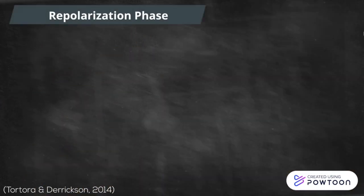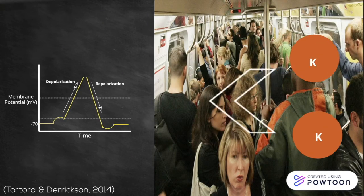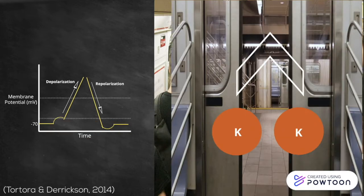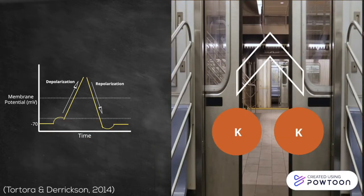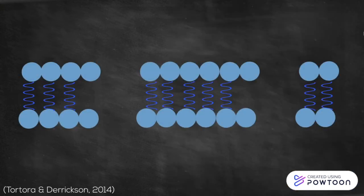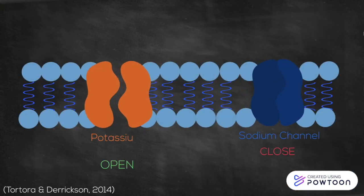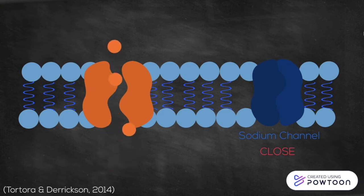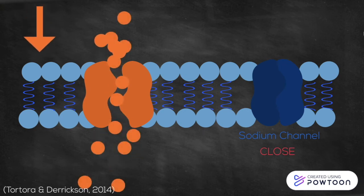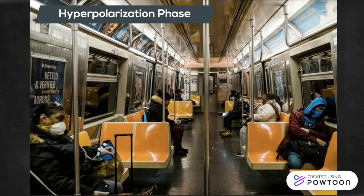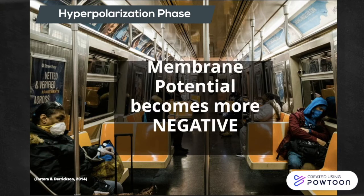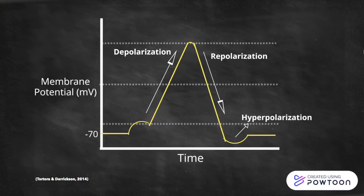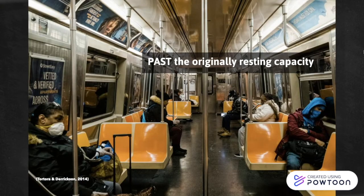The next phase is the repolarization phase. Now the train needs to get back to its resting capacity once it reaches the station. At the next stop, the potassium passengers want to get off the train through the potassium doors, as the subway is too crowded. At the same time, the sodium doors also close, preventing any more passengers from getting on. Since positively charged ions are leaving the cell, the overall membrane potential, or passenger capacity, is decreasing. The next step is the hyperpolarization phase. Since so many potassium passengers are leaving the train, the membrane potential, or capacity of passengers, becomes more negative. For a brief moment, the amount of passengers drops past the original resting capacity.